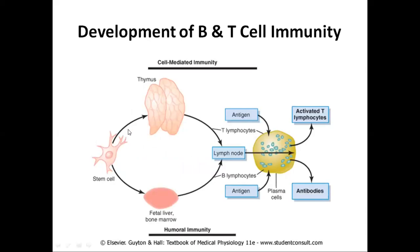All types of cells develop from the bone marrow from pluripotent hematopoietic stem cells. From these, common progenitor lymphoid cells are formed, which ultimately develop into B and T lymphocytes. The pre-processing of T lymphocytes takes place in the thymus, while that of B lymphocytes takes place in the fetal liver and bone marrow.